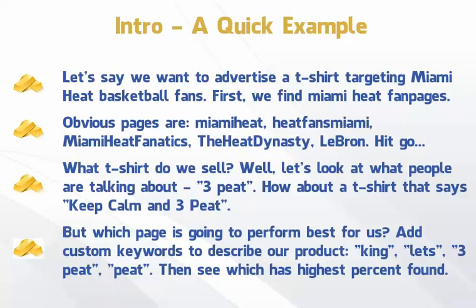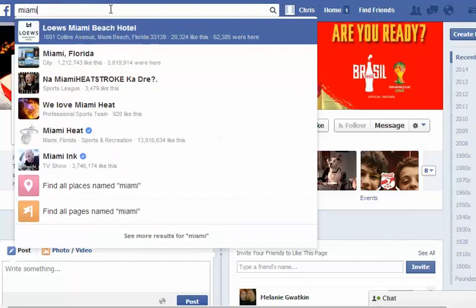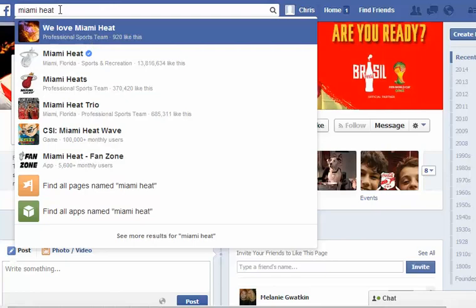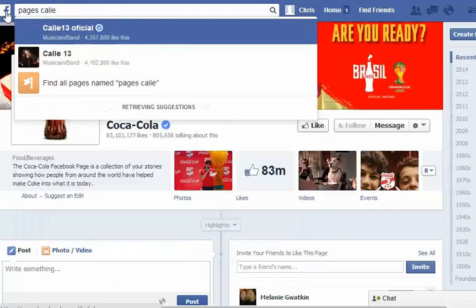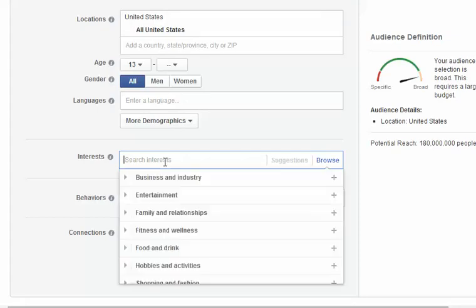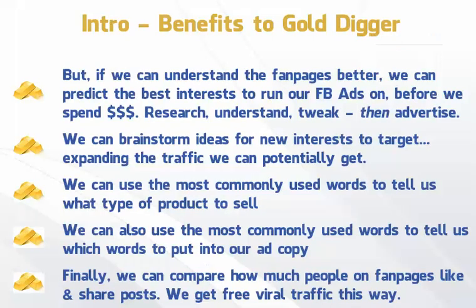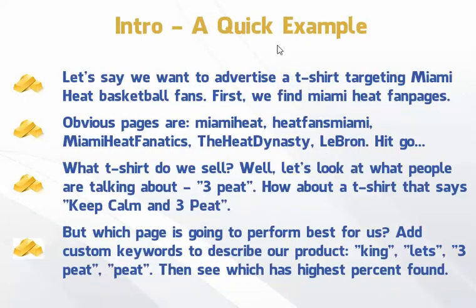Let me give you a quick example. Let's say we want to advertise a t-shirt targeting the Miami Heat basketball team — we want to find people who like the Miami Heat and related fan pages. If I go over to Facebook and search 'Miami Heat,' it brings up a list of possible pages we can target. I can also refine that, or go over to the Facebook Ads Manager, type in 'Miami Heat,' and generate a list of potential pages and interests to target. Doing this for a few seconds brings up a handful of different fan pages.